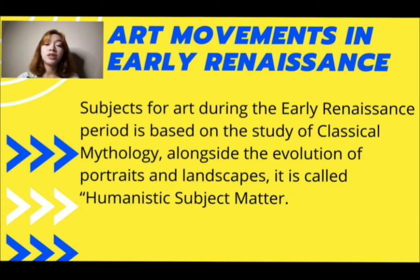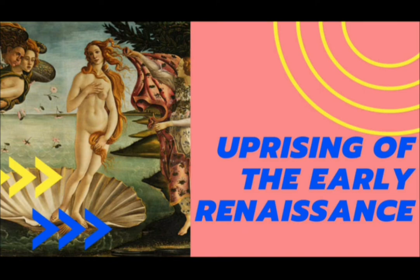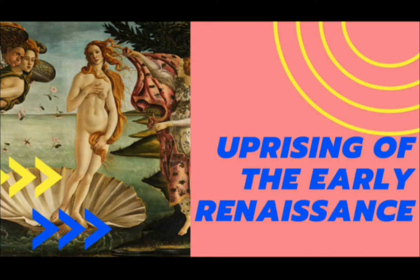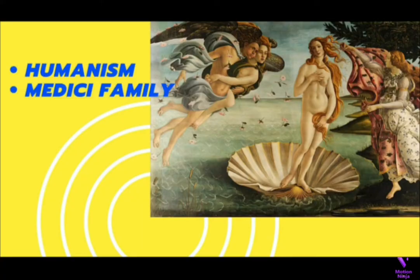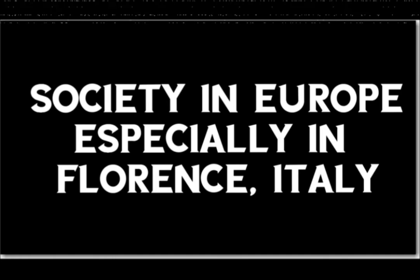And for the last characteristic, we have secularism. From the word itself — secular meaning of this world — during the early Renaissance period, people started to see life on Earth as worth living for its own sake, and not just as an ordeal to endure before going to heaven. Before the Renaissance, Europe experienced a so-called Dark Age, consisting of wars, famine, and the Black Death, or what is also known as the Black Plague. After such a horrible period, the 14th century began, and civilization started to advance in science and art. The rise of the Renaissance started when humanism was gaining its momentum during the 14th century, which greatly influenced many different aspects of society in Europe, especially Florence, Italy.